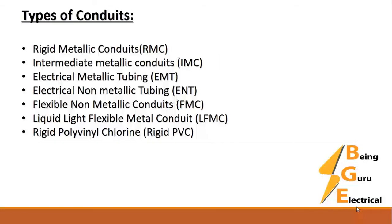Types of conduits include: Rigid Metallic Conduit (RMC), Intermediate Metallic Conduit (IMC), Electrical Metallic Tubing (EMT), Electrical Nonmetallic Tubing (ENT), Flexible Nonmetallic Conduit (FMC), Liquid-Tight Flexible Metal Conduit (LFMC), and Rigid Polyvinyl Chloride, also called Rigid PVC conduits.